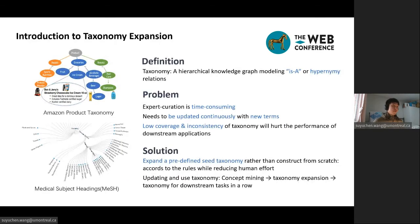First, taxonomy is a hierarchical knowledge graph modeling is-a or hypernymy relations. It is widely used in e-commerce and academia, such as Amazon product taxonomy showing the categories of goods, or Mesh, maintaining the hierarchy of research tags.